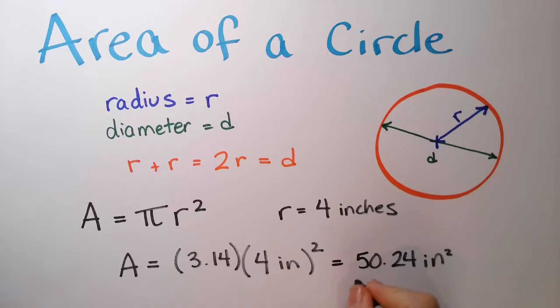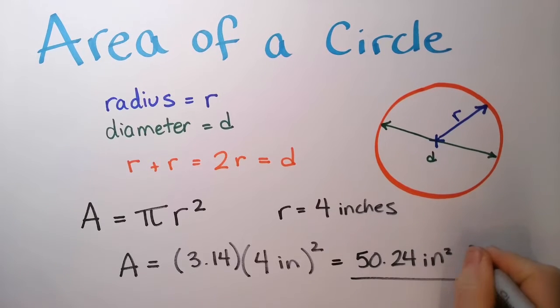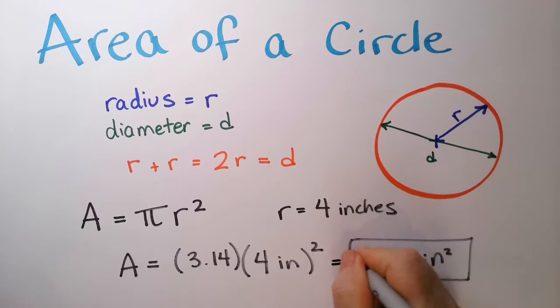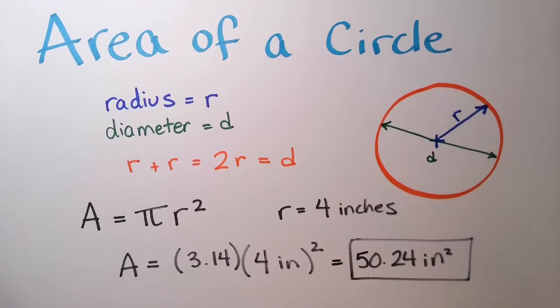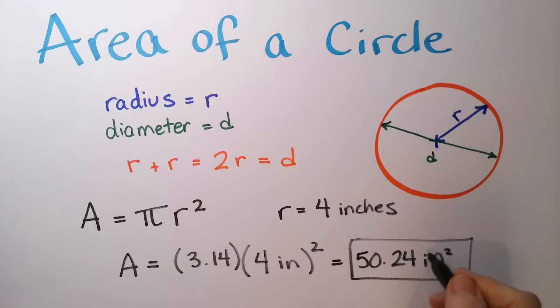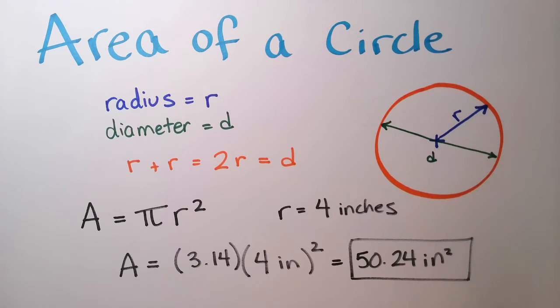Your units are always going to be in square inches, or square feet, or square centimeters, or square yards — it's going to be some unit that is squared.